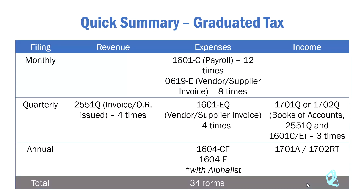The table has a header showing the frequency of filing: monthly, quarterly, and annually. It also shows revenue, expenses, and income — these are the basis of the computations of the taxes for those specified returns. Starting with monthly filing, you have Form 1601C, which is the withholding tax on compensation.